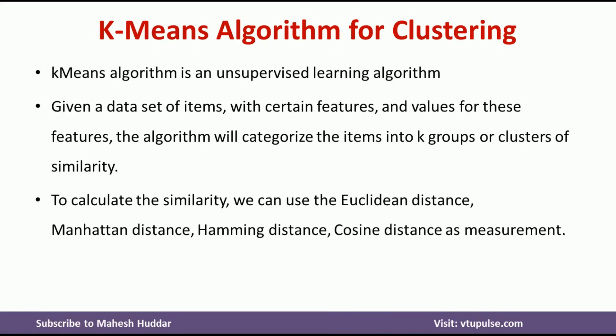To calculate the similarity between the data points, we can use either Euclidean distance, Manhattan distance, Hamming distance, or cosine distance as a measurement. Using these distance measurements, we can calculate the similarity between the data points and categorize them into different clusters.